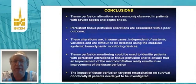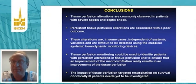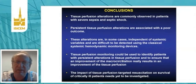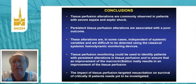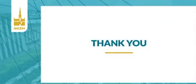In conclusion, tissue perfusion alterations are commonly observed in critically ill patients. The persistence of tissue perfusion alterations is associated with poor outcome, and these alterations are in some cases independent of systemic variables and very difficult to detect using classical systemic hemodynamic monitoring. Tissue perfusion monitoring can identify patients with persistent alterations and help ensure that improvement of the macrocirculation truly results in improvement of tissue perfusion. The impact of tissue perfusion-targeted resuscitation on survival in critically ill patients needs to be further investigated. Thank you very much for your attention.